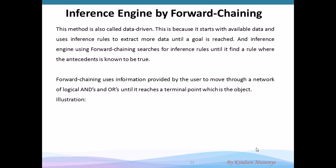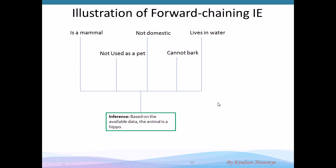For instance using forward chaining: is it a domestic animal? Yes. Does it live on land? Yes. Is it a mammal? Yes. Does it bark? Yes. Then it is a dog. So the goal or object is reached at the later end after applying the rules. The data might be: is a mammal, not domestic, not used as a pet, cannot bark, and lives in water. Based on this data we draw a conclusion — the animal is a hippo — because the data matches the attributes of a hippo. The forward chaining inference engine takes data and makes an inference to find the matching object.